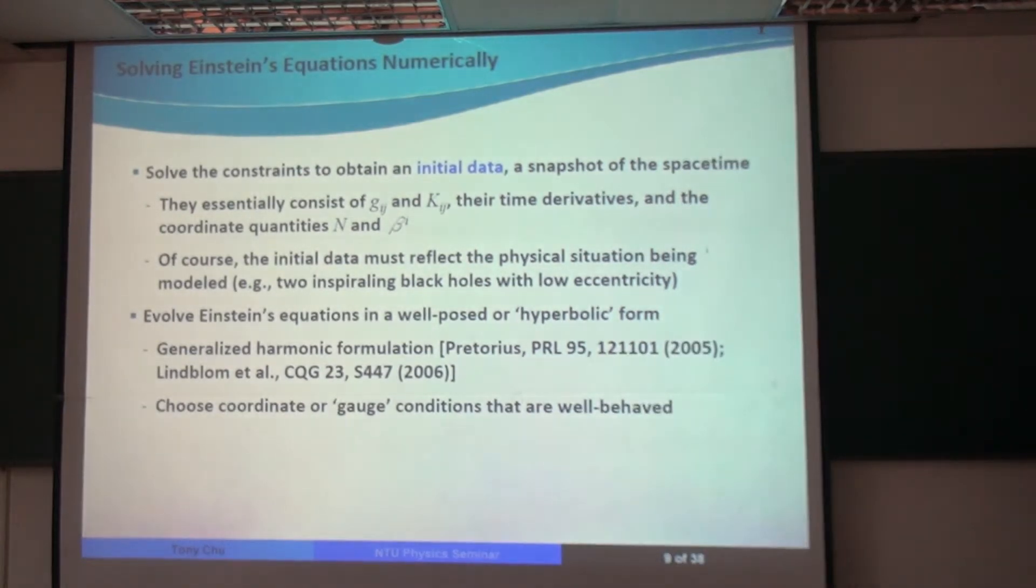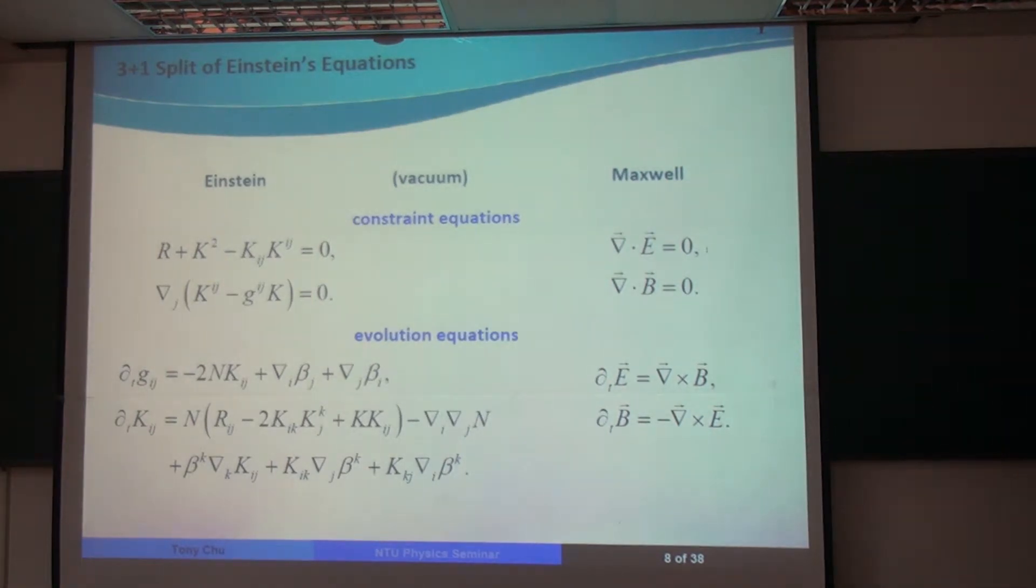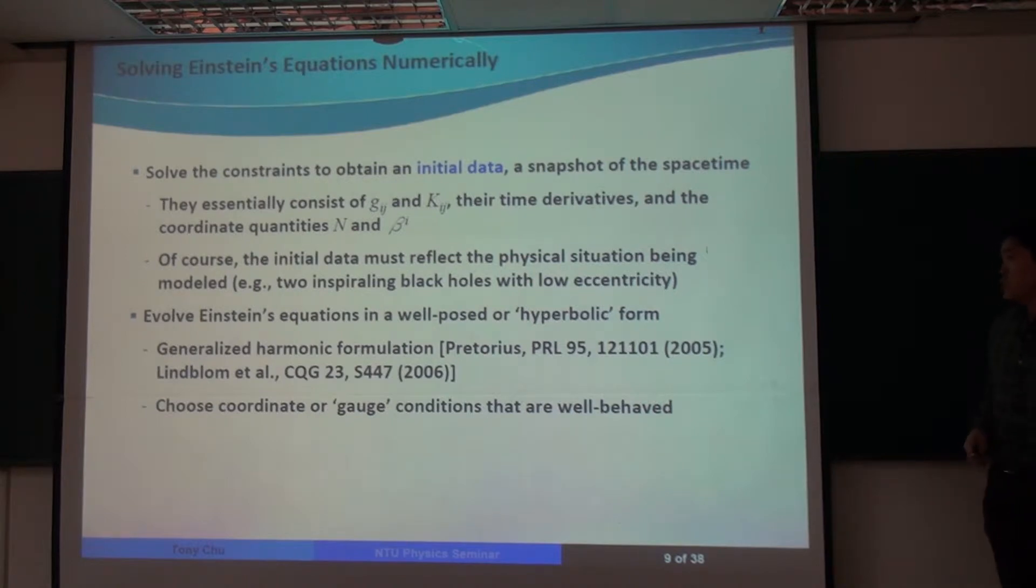So the evolution equations that I showed you before, these are actually not well-posed. And this has caused a big problem in the past for trying to evolve Einstein's equations. And a lot of extensive research has been done to find ways to formulate these equations in a well-posed form. The particular formulation that my collaborators and I use is called the generalized harmonic formulation.